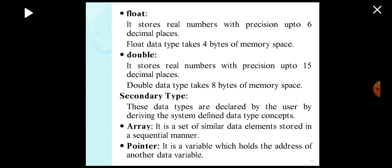Next, secondary data types. These data types are declared by the user by deriving the system-defined data types or predefined data type concepts. First, array type. It is a set of similar data types stored in a sequential manner. The main drawback of this type is that it can hold multiple data, but all the data should be of same data types or similar types.